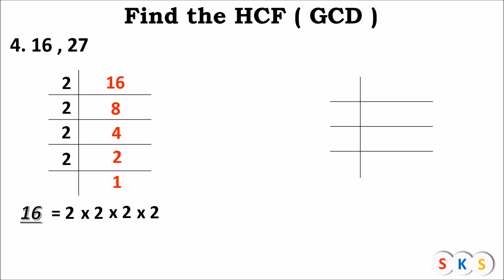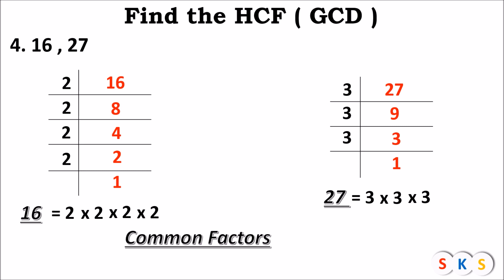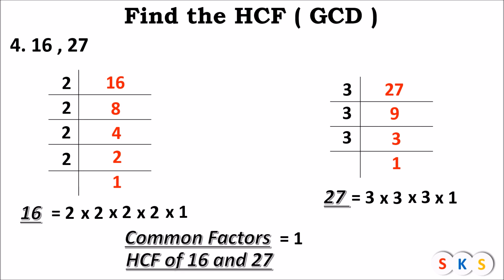Now find the prime factor of 27. 27 is divisible by 3, which is prime. 27 ÷ 3 = 9, 9 ÷ 3 = 3, 3 ÷ 3 = 1. Therefore, the prime factor of 27 is 3 × 3 × 3. Now find common factors — can you see any number common in both? No. But 1 is a factor of all numbers. So when you don't find any common factor, you take 1. Therefore, SCF of 16 and 27 is 1.